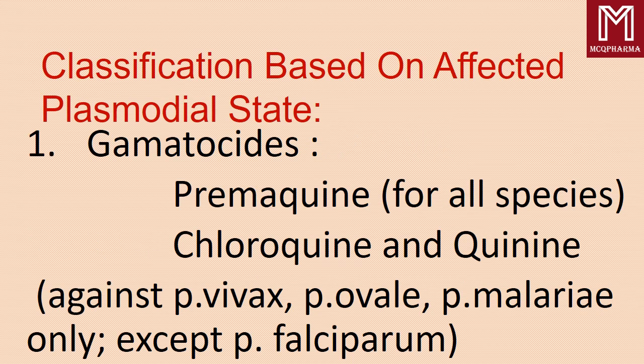Classification based on affected plasmodial state. First, gametocytes — example: primaquine for all species. Chloroquine and quinine are used against Plasmodium vivax, Plasmodium ovale, and Plasmodium malariae, except Plasmodium falciparum.